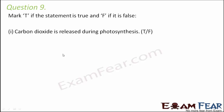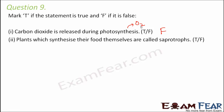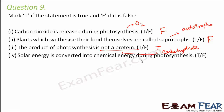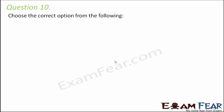Question number nine: Mark true or false. Carbon dioxide is released during photosynthesis — False; oxygen is released, and carbon dioxide is actually utilized during photosynthesis. Plants which synthesize their own food are called saprotrophs — False; such plants are called autotrophs, meaning self-dependent. The product of photosynthesis is not a protein — True; the product is a carbohydrate, not a protein. Solar energy is converted into chemical energy during photosynthesis — True; solar energy is trapped by chlorophyll and converted into chemical energy, which forms carbohydrates from carbon dioxide and water.